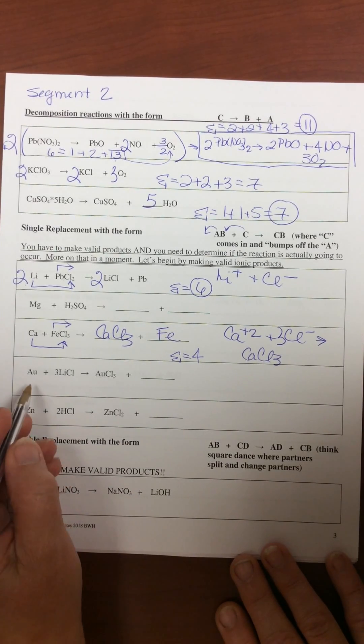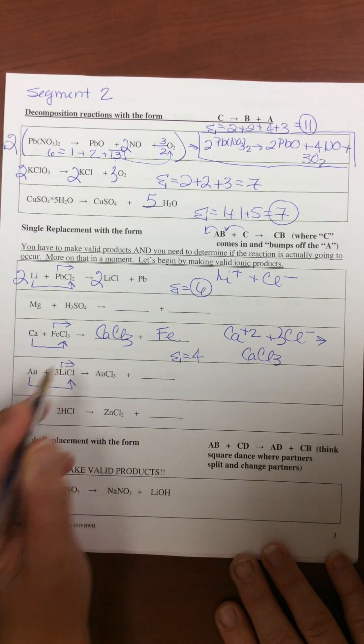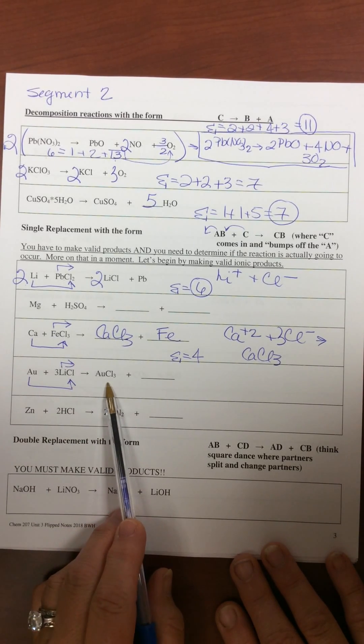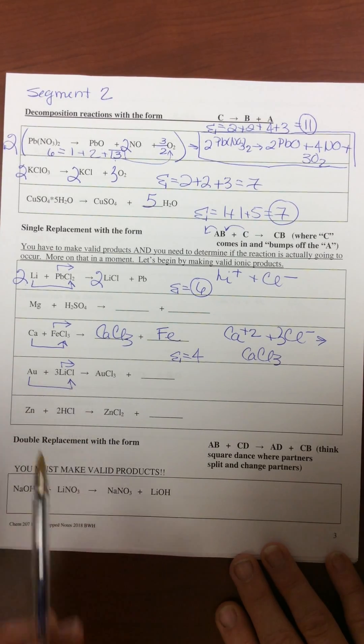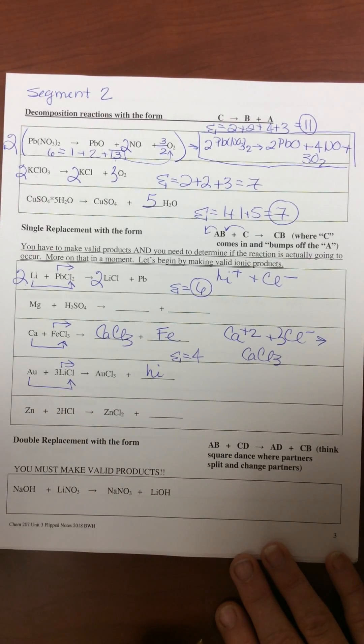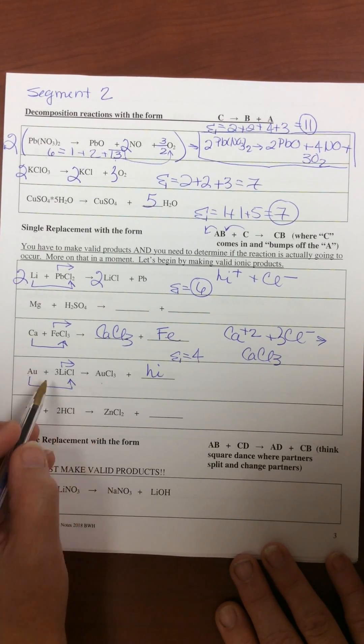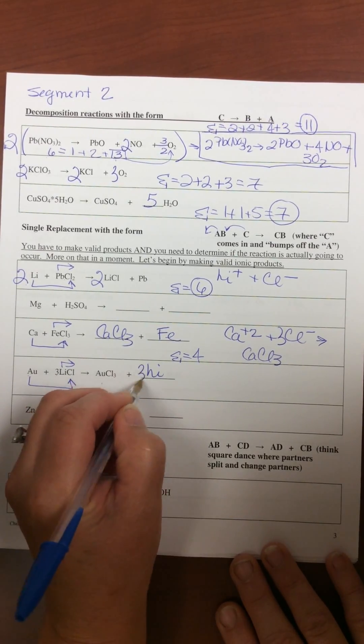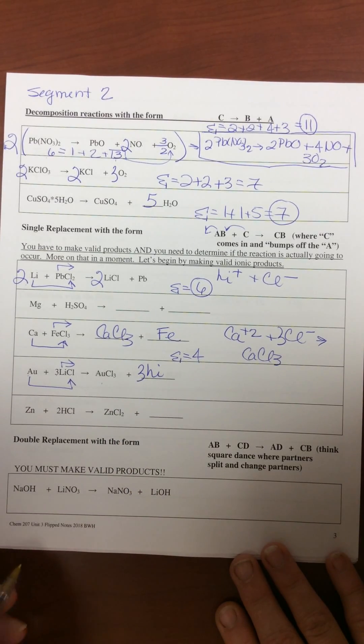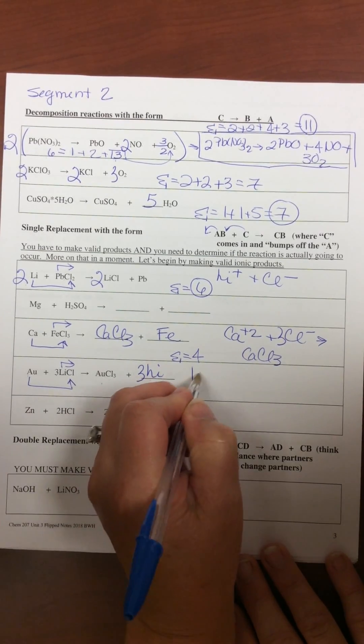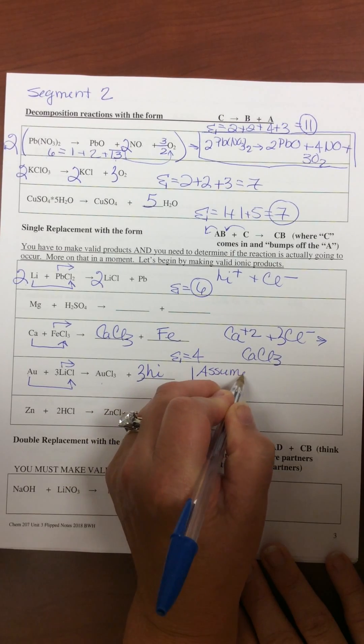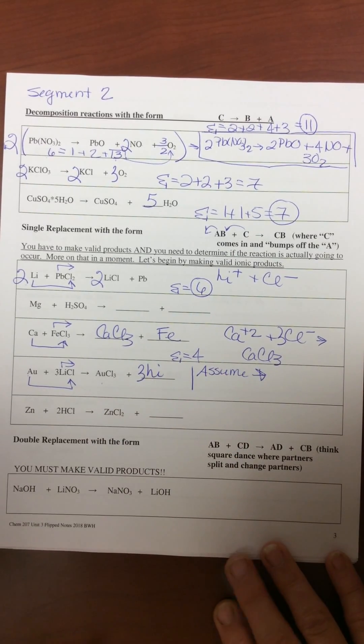On this one, because gold has multiple ion forms, I predicted this one for you. So this one, the lithium will be displaced, and then we need to balance. One gold, one gold, three lithiums, three lithiums. By the way, we are assuming that this will go forward, because we haven't looked at the activity series yet.